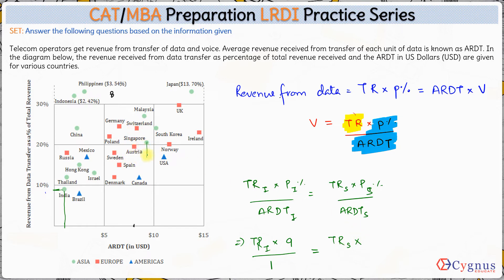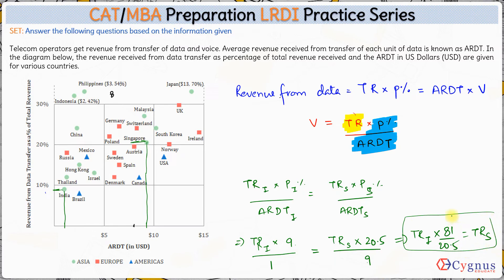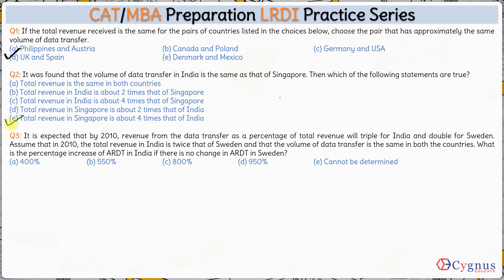Singapore is over here on the chart. The percentage for Singapore is approximately 20–21% — let us say 20.5% — and ARDT for Singapore is approximately 9. So: Total Revenue India × 9% / 1 = Total Revenue Singapore × 20.5% / 9. This gives Total Revenue India × 81 / 20.5 = Total Revenue Singapore. Since 81 / 20.5 ≈ 4, the total revenue of Singapore is approximately 4 times the total revenue of India. Hence option E is the correct answer.